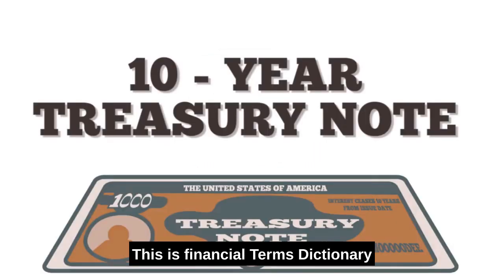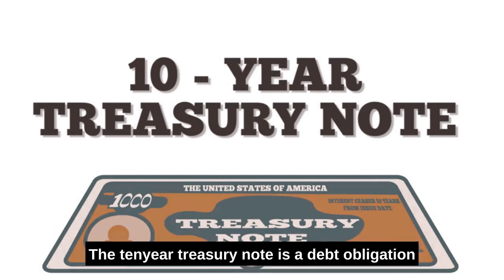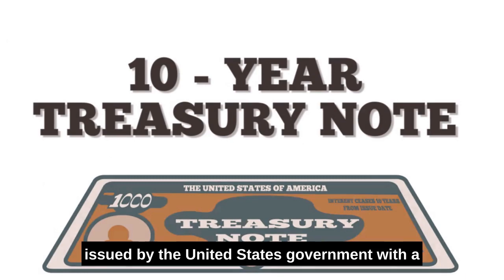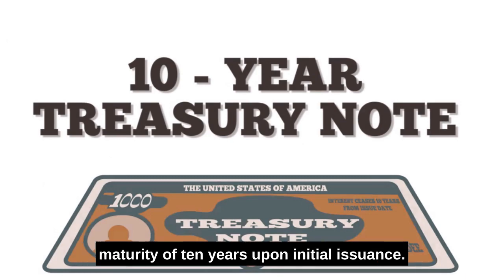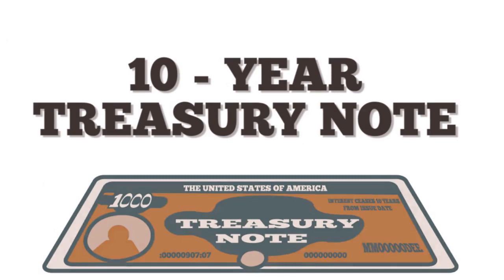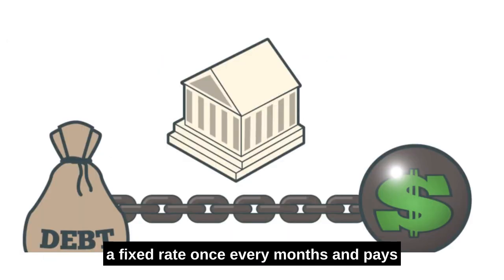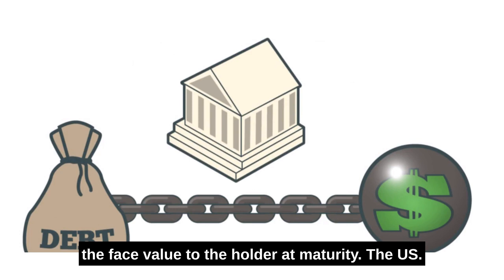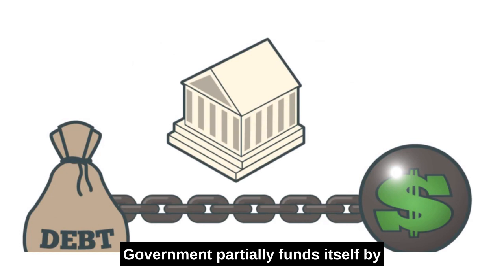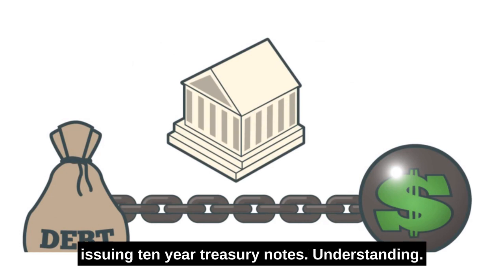Hello, this is Financial Terms Dictionary TV. What is a 10-year Treasury Note? The 10-year Treasury Note is a debt obligation issued by the United States government with a maturity of 10 years upon initial issuance. It pays interest at a fixed rate once every 6 months and pays the face value to the holder at maturity. The U.S. government partially funds itself by issuing 10-year Treasury Notes.